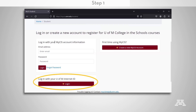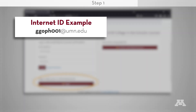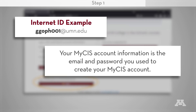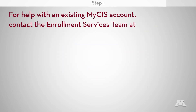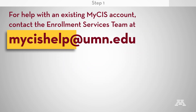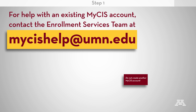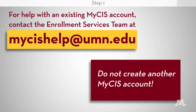Your Internet ID is the part of your U of M email that comes before @umn.edu. Your MyCIS account information is the email and password you used to create your MyCIS account. If you already have a MyCIS account and are having trouble logging in, do not create another MyCIS account. Contact the Enrollment Services team at mycishelp@umn.edu.